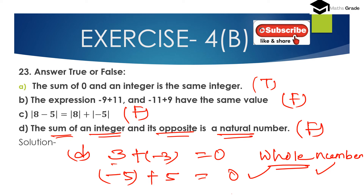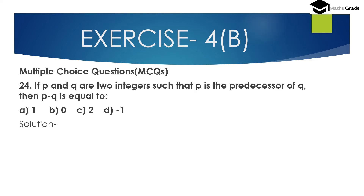Summary of Question 23: A — The sum of 0 and an integer is the same integer: TRUE. B — The expressions minus 9 plus 11 and minus 11 plus 9 have the same value: FALSE. C — |8 − 5| = |8| + |−5|: FALSE. D — The sum of an integer and its opposite is a natural number: FALSE.